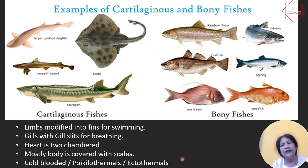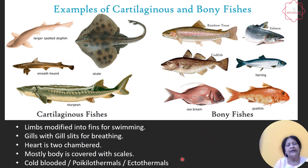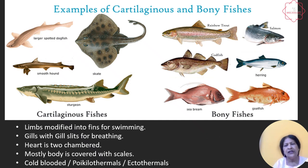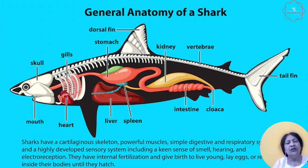Ectothermal means animals whose body temperature fluctuates with the environment. If the outer environment is cold, their body temperature will go low, and if the outer environmental temperature is high, their body temperature also tends to become higher. Now this is an internal organization of the body of a fish. The fins are clearly shown, assisting them in swimming. There is a tail fin also known as the caudal fin, a dorsal fin on the upper side, and pectoral and pelvic fins as well.